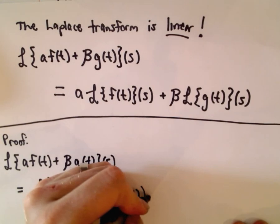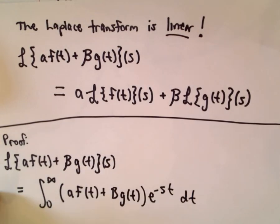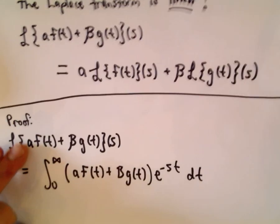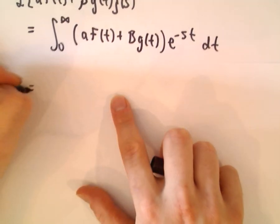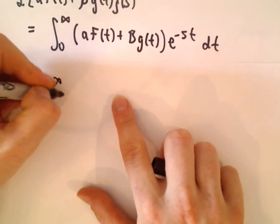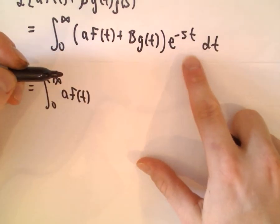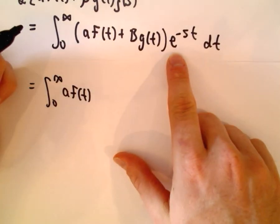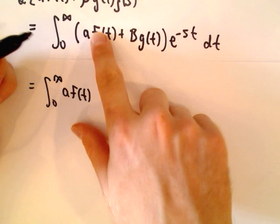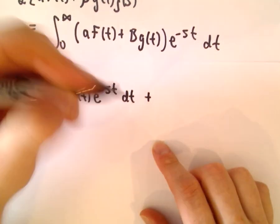And then we have to multiply that by e to the negative s t dt. And now it's just busting up the integral, just using properties of the integral. We can break this up into two separate integrals. So that's 0 to infinity of a times f of t. You definitely have to distribute out the e to the negative s t, so when you distribute that we'll get e to the negative s t dt.